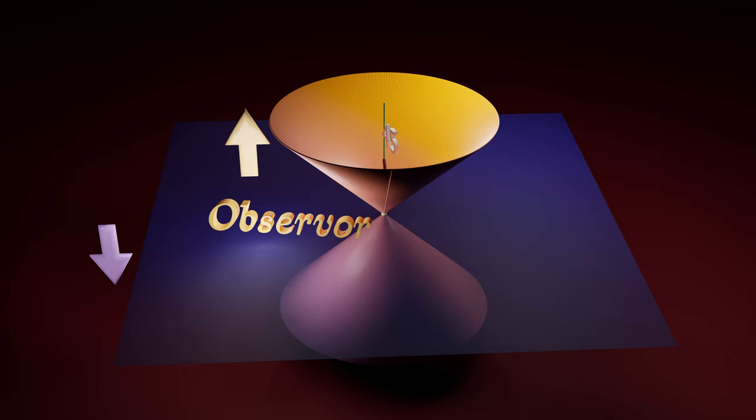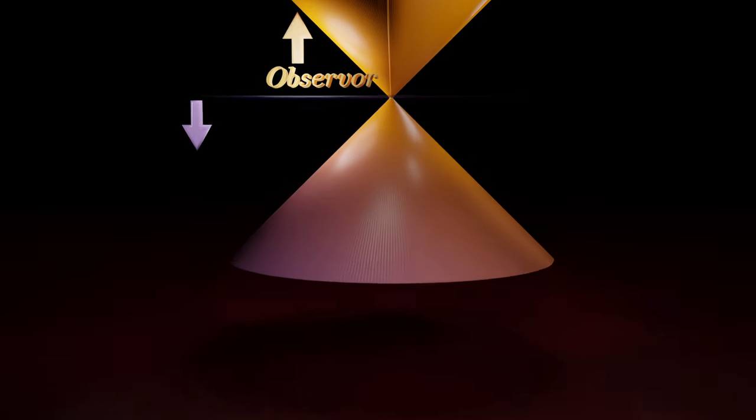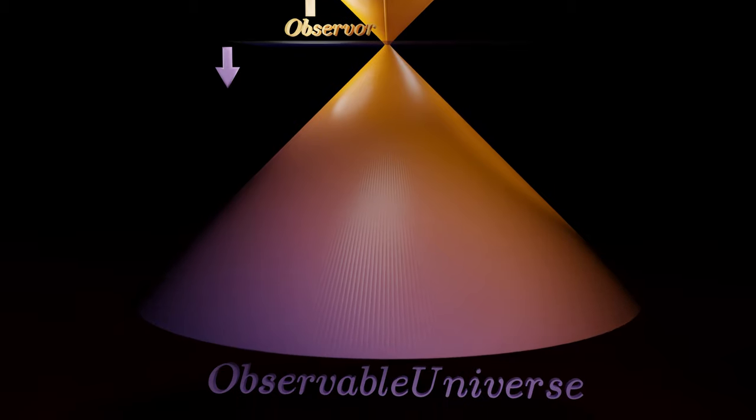If we take ourselves to be this observer at this point in space-time and continue the path of the downward cone on to the beginning of the time, everything inside the downward cone will be the so-called observable universe.